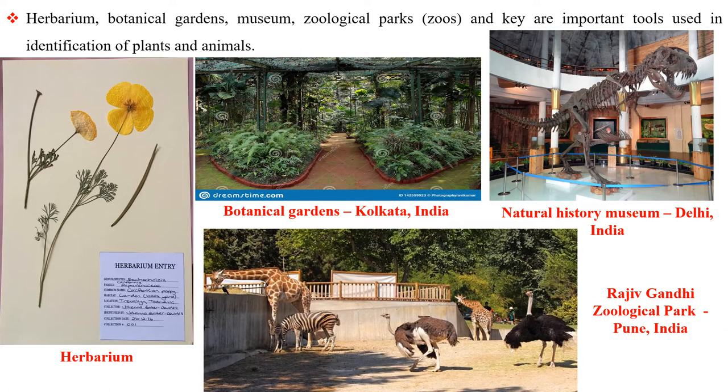Herbarium, botanical gardens, museums, zoological parks, zoos and key are important tools used in the identification of plants and animals.